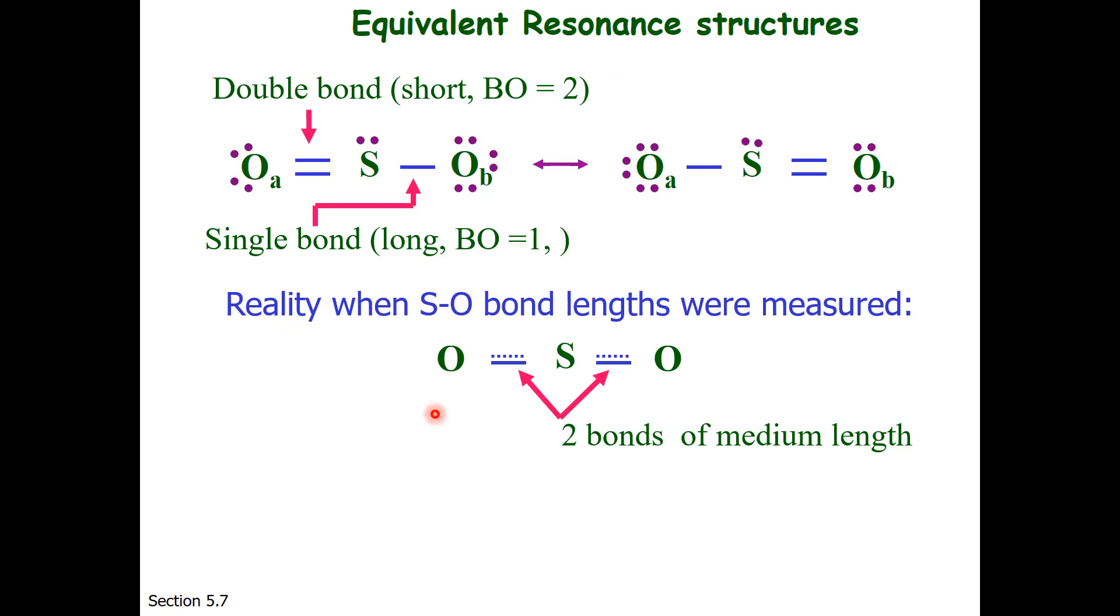So this led to the idea of resonance, that perhaps this double bond was not localized just between this sulfur and this oxygen, but rather spread out across the entire molecule. So these two electrons can wander. Their orbital probability region includes three atoms instead of two. So the bond order for this particular structure would be number of bonds divided by number of bonding regions.